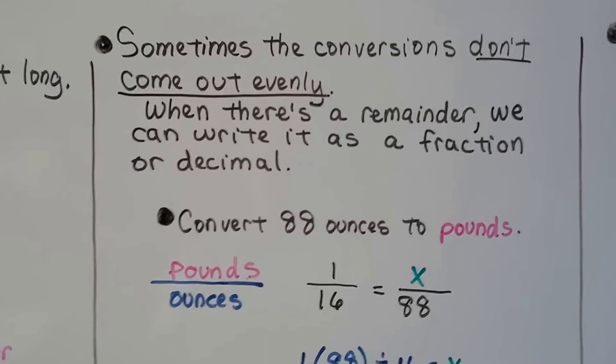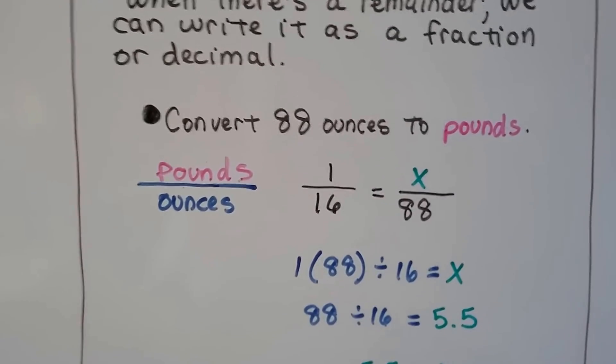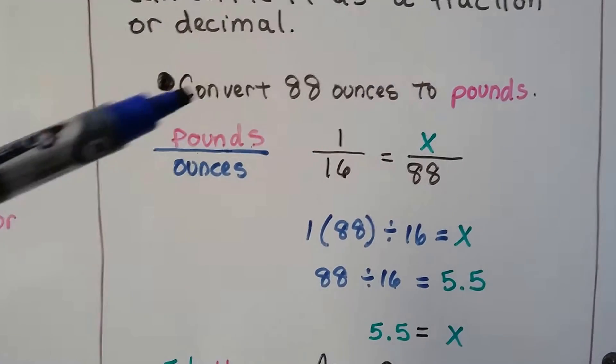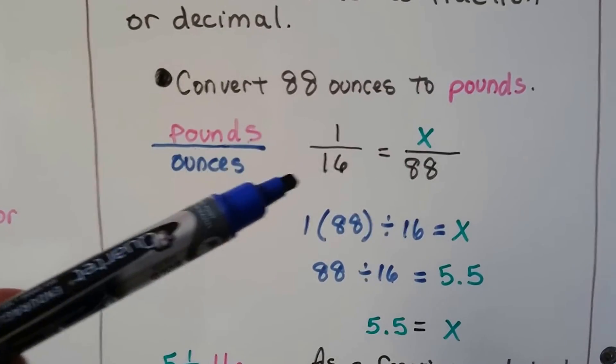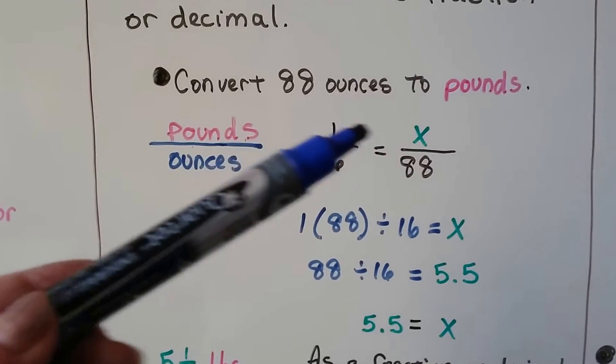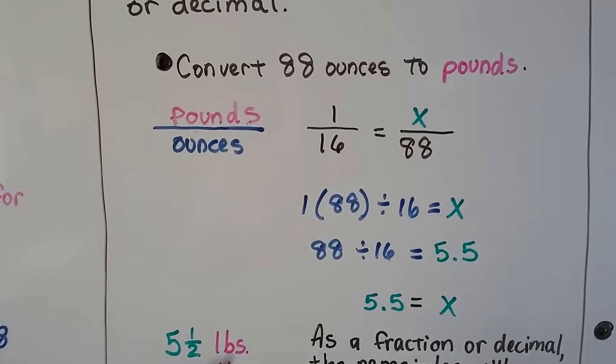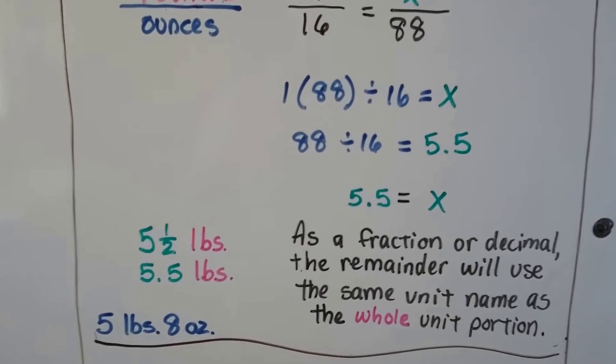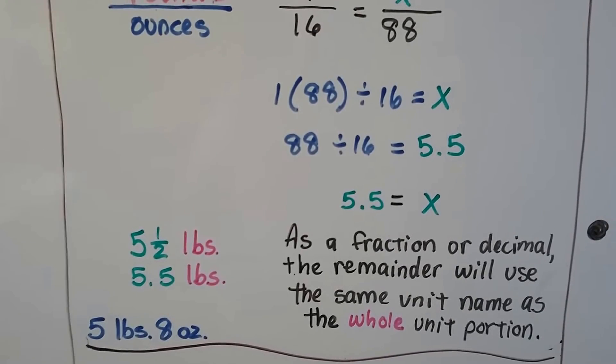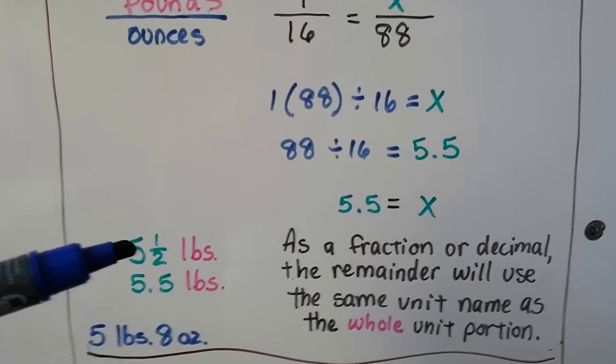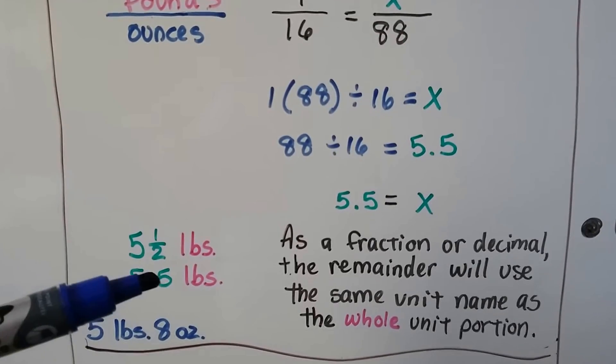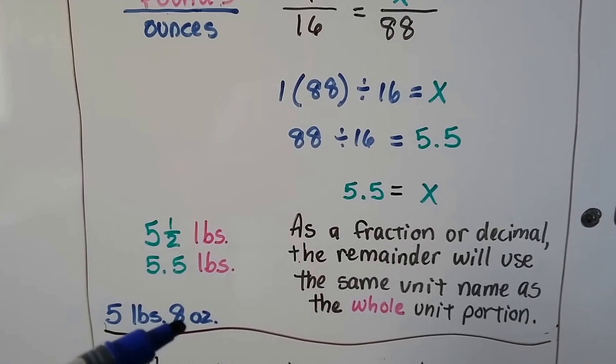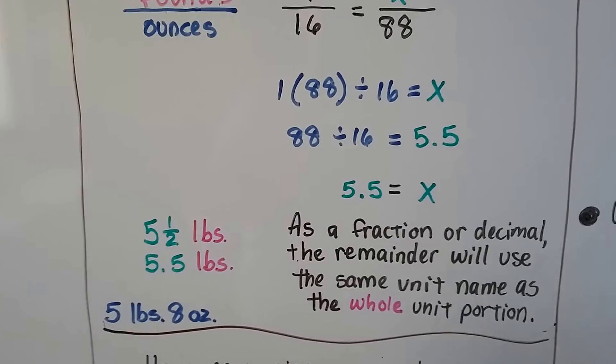Sometimes the conversions don't come out evenly. And when there's a remainder, we can write it as a fraction or a decimal. To convert 88 ounces to pounds, it's important to know that one pound is 16 ounces. We're looking for pounds, so that's going to be our numerator over the ounces. One pound is 16 ounces. This 16 is going to become an 88. The one is going to become whatever X is. We cross multiply 1 times 88 and then divide it by that third number, the 16. We get 5.5. So we know X equals 5.5. And as a fraction or decimal, the remainder will use the same unit name as the whole unit portion. So if we've got 5 and a half, it's going to be pounds. If it's 5 and 5 tenths, it's going to be pounds. We don't have to say the ounces. Now we know that if there's 16 ounces to a pound, then 8 ounces is half a pound. So it's really 5 pounds 8 ounces. It's the same thing as these.